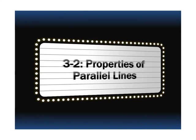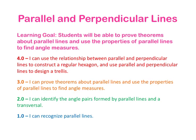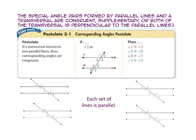Lesson 3-2 covers the properties of parallel lines. Look over the learning goal and scale and see where you are before we start the lesson. The special angle pairs formed by parallel lines and a transversal are congruent, supplementary, or both if the transversal is perpendicular to the parallel lines.